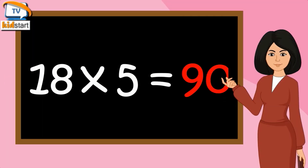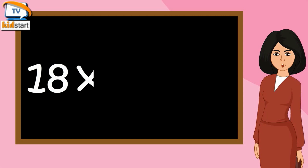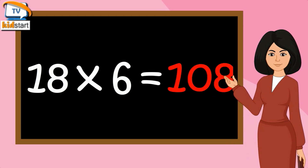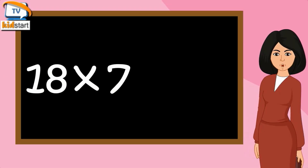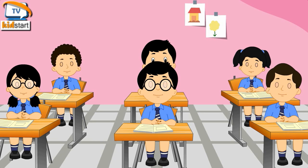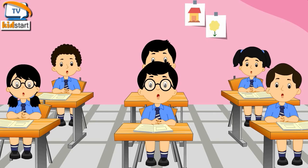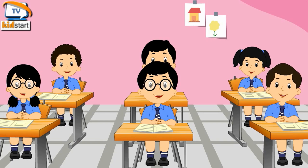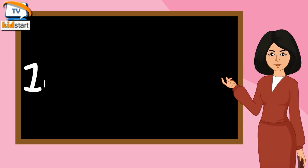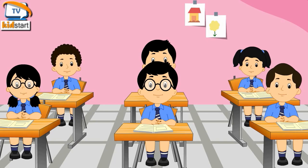Eighteen fives are ninety. Eighteen sixes are one hundred and eight. 18 sevens are 126. 18 eights are 144. 18 nines are 162. 18 tens are 180.